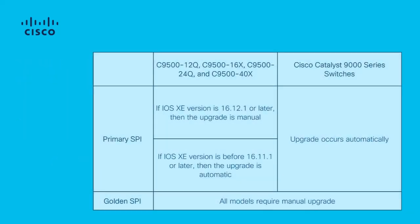Let's look at the primary SPI upgrade. The primary SPI must only be manually upgraded for these models, starting from Cisco IOS XE 16.12.1 or later. In earlier releases, it is done automatically. In all other Cisco 9000 series switches, the ROMMON upgrade occurs automatically.